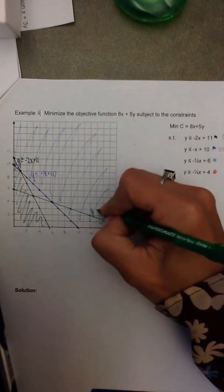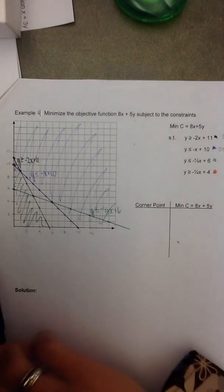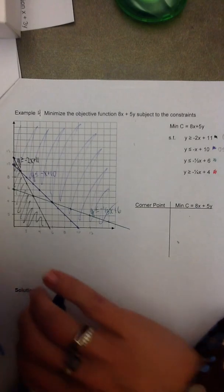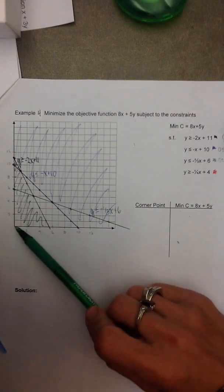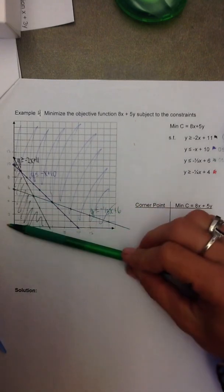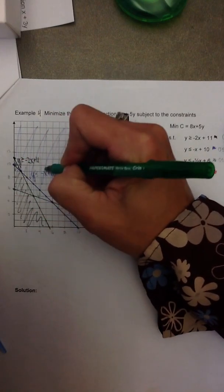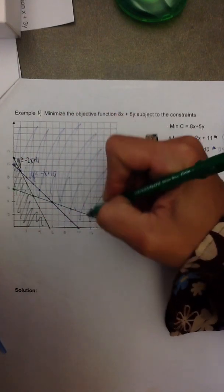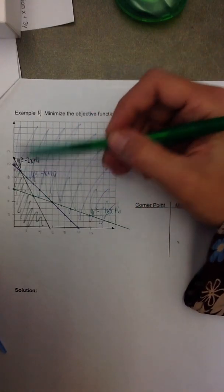Label the line as y is less than or equal to negative 1 third x plus 6. And then choose a test point. Again, I like 0,0. So I get 0 less than or equal to 0 plus 6. That's 0 is less than or equal to 6, which is a true statement. So once again, 0,0 gave me a true statement. So that means all points beneath this line will give me a true statement. So I'm going to cross out or shade above the line. And you can see when I cross out, the only piece that got eliminated from the feasible set was this small triangle here.